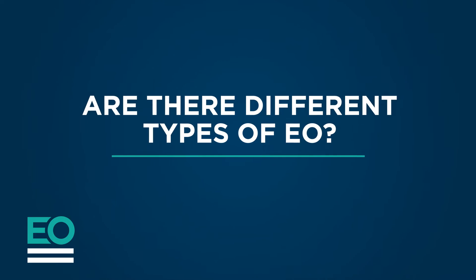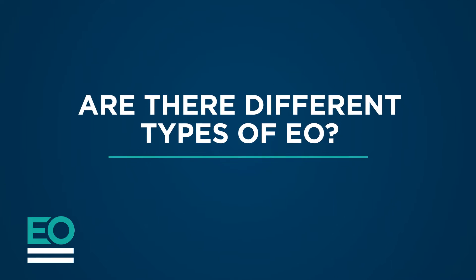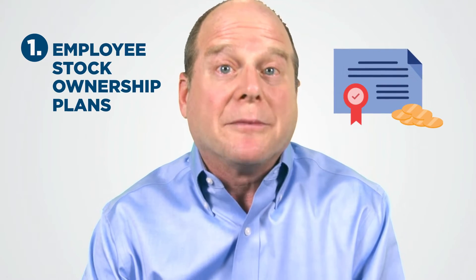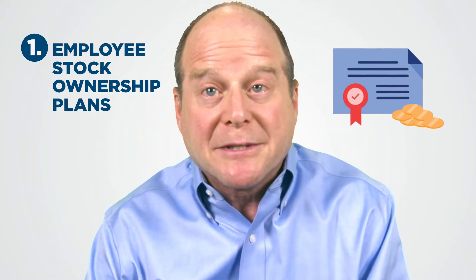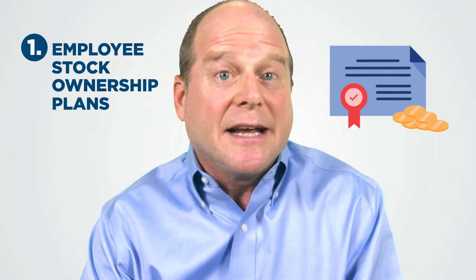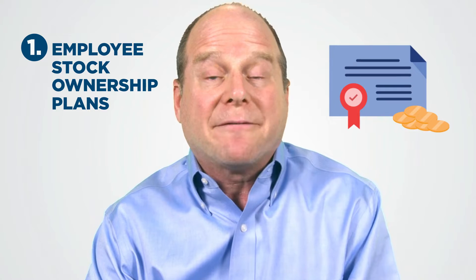Are there different types of EO? There are three main types of EO. The first is Employee Stock Ownership Plans, or more commonly known as ESOPs. These are qualified retirement plans that transfer all or a portion of the company's stock into a trust administered on behalf of all the employees.